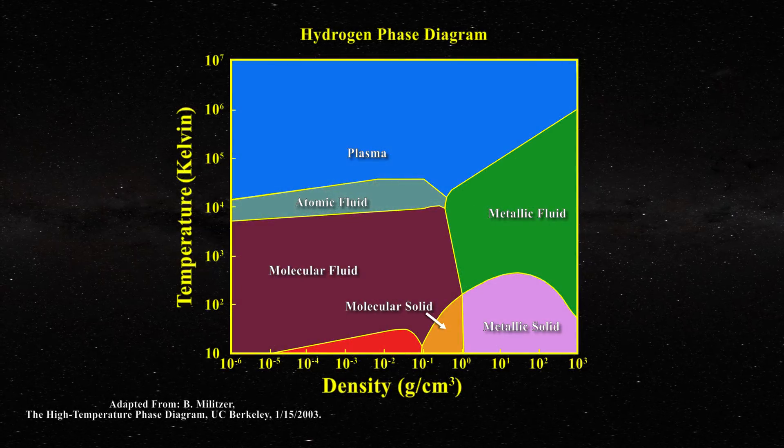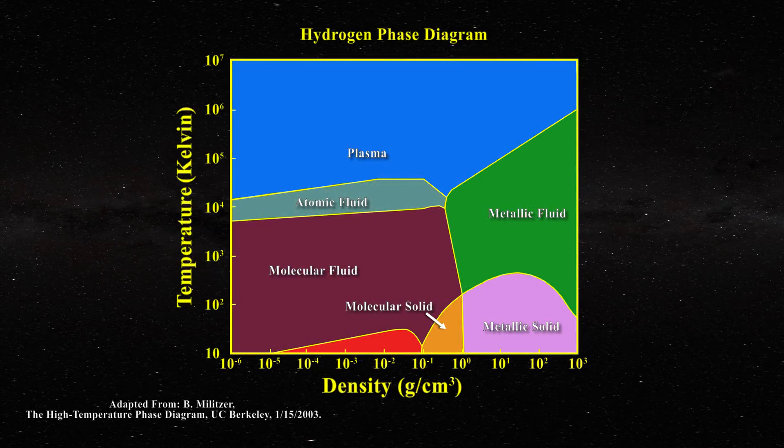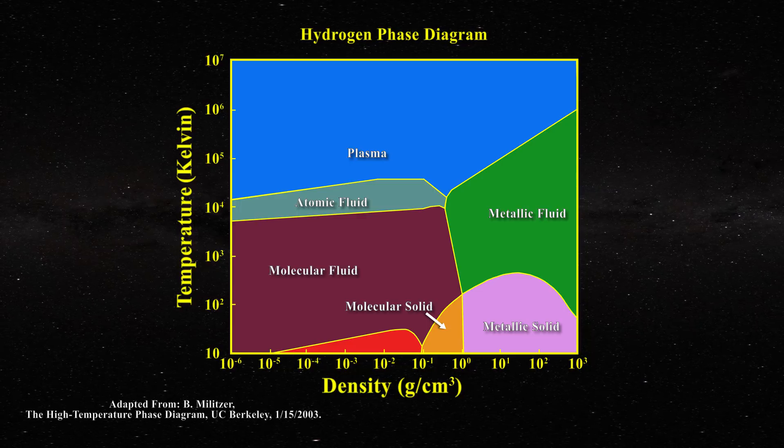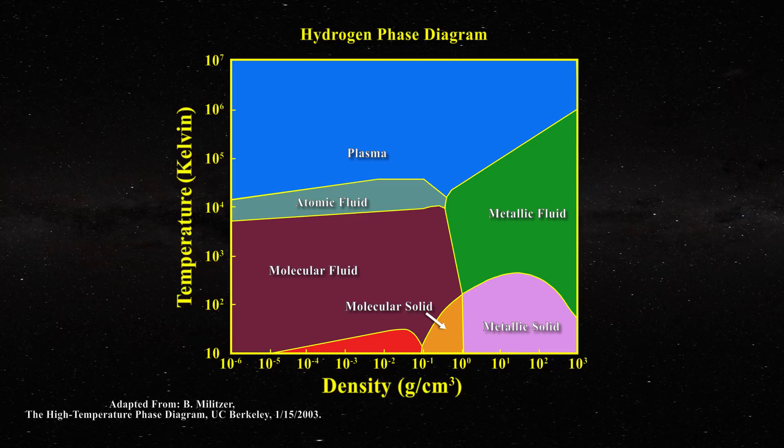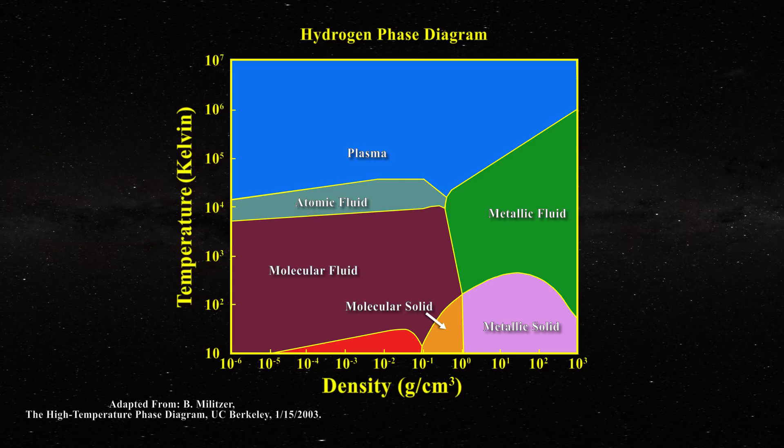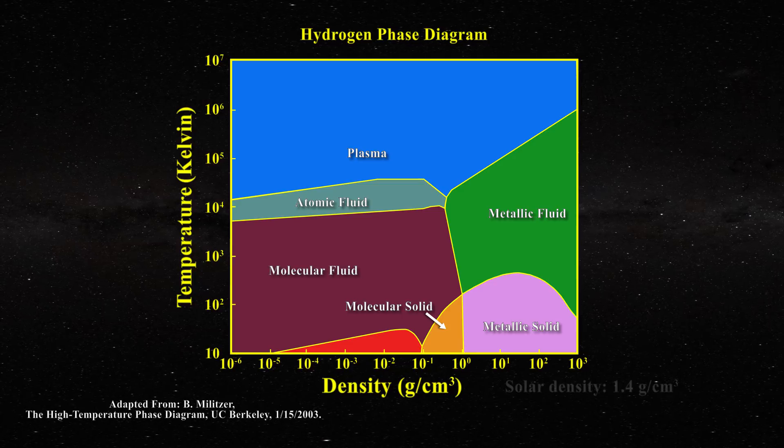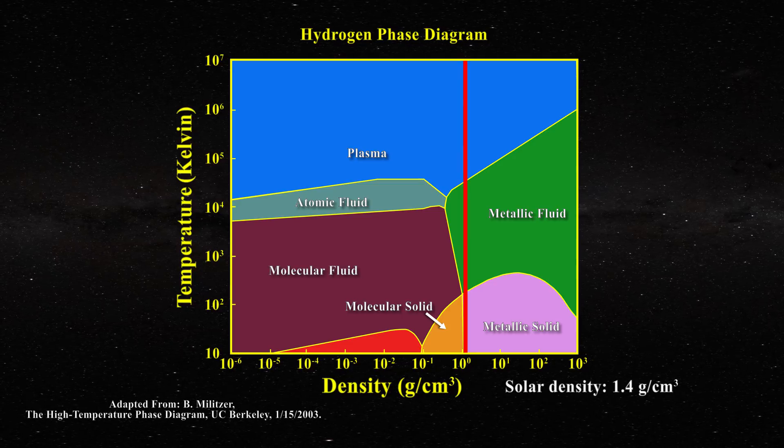That all being said, let us now examine this simplified phase diagram. The full diagram is available through the Berkeley website linked below. This time, temperature in Kelvin on the y-axis is plotted against density on the x-axis. The average density of the sun is 1.4 grams per centimeter cubed. That corresponds to this position on the plot.